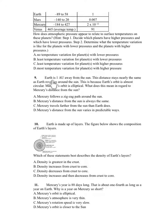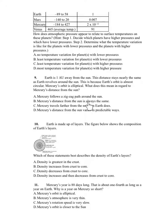Number 9. Earth is one astronomical unit away from the Sun. This distance stays nearly the same as Earth revolves around the Sun because Earth's orbit is almost circular. Mercury's orbit is elliptical. What does this mean in regard to Mercury's distance from the Sun? A. Mercury follows a zigzag path around the Sun. B. Mercury's distance from the Sun is always the same. C. Mercury travels farther from the Sun than Earth does. D. Mercury's distance from the Sun varies in predictable ways.